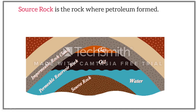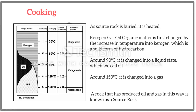The source rock was formed along with the organic matter. As source rock is buried, it is heated. Organic matter is first changed by the increase in temperature into kerogen, which is a solid form of hydrocarbon. Around 90 degrees temperature, it is changed into a liquid state, which we call oil. Around 150 degrees temperature, it is changed into a gas. A rock that has produced oil and gas in this way is known as source rock.